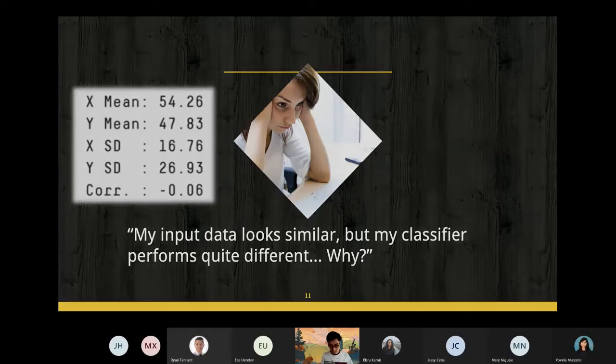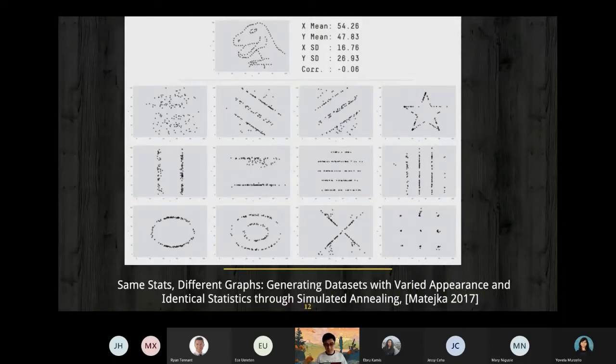If you plot your data, you can even find dinosaurs in your data. All of those datasets here have exactly the same mean, standard deviation, correlations. But if you see them in the charts in visualization, you can see that they are actually dramatically different datasets.